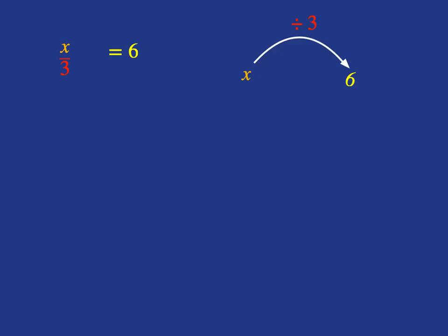We want to get back to x on its own. When we solve an equation, we want to get x on its own. How do we get back to x on its own? We do the inverse operation of division, which is multiplication, so we must multiply by 3.